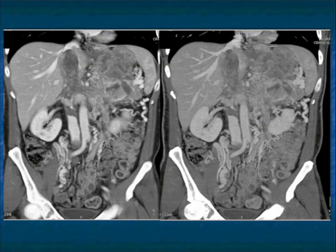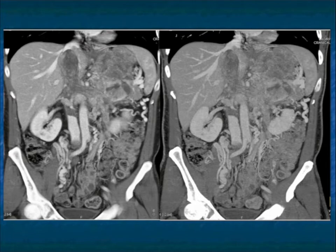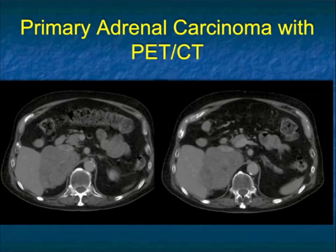I'm showing you a lot of cases since most of you rarely see primary adrenal cortical carcinomas. There are literally hundreds of cases in the US and a lot of them seem to end up at Hopkins. We have a terrific endocrine group, a terrific adrenal surgery group, terrific pathology and therapy, and you can see very nicely the extent of disease.